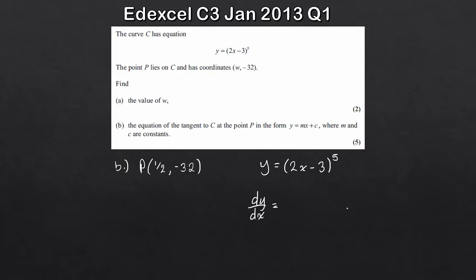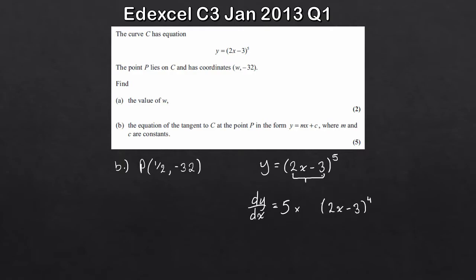Using the chain rule: take the power and bring it to the front as a product. So that's 5 times (2x - 3) to the power of 4 (subtracting 1 from the power), and then multiply by the differential of the inside bracket. The differential of (2x - 3) is just 2. So we have 5 × 2 × (2x - 3)^4, which simplifies to dy/dx = 10(2x - 3)^4.